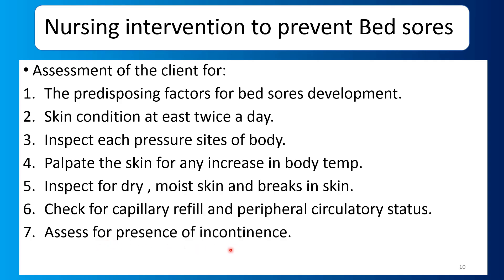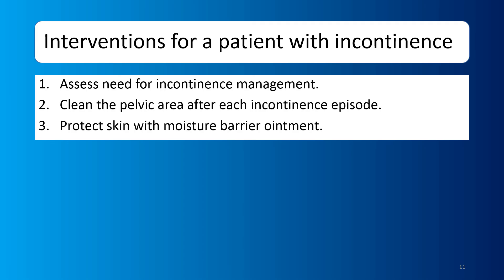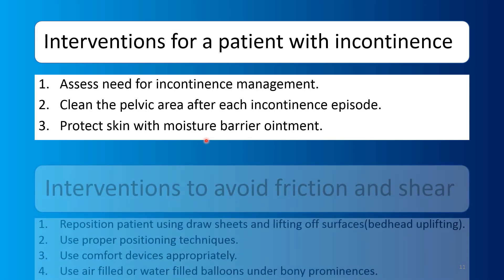Assess for presence of incontinence — check the client's involuntary dribbling of urine or feces. Assess for neurovascular status. For a patient with incontinence, assess the need for incontinence management. Give certain medications or exercises. Keep the patient clean — if the patient soils, clean the area thoroughly. Apply a moisturizer to the skin as a moisture barrier so that skin damage does not occur.